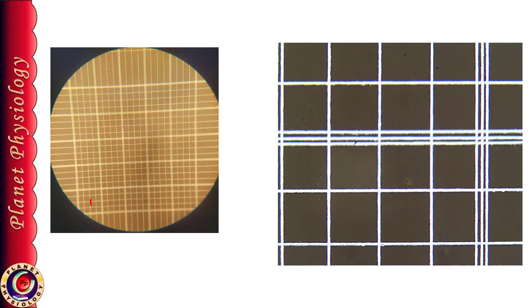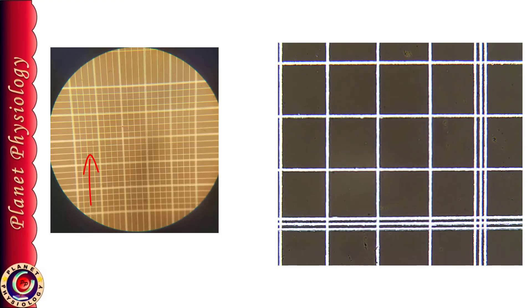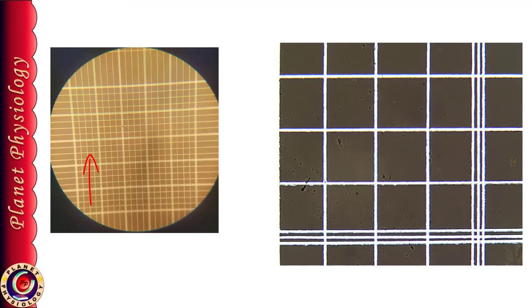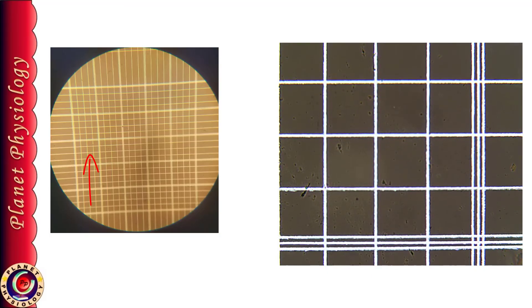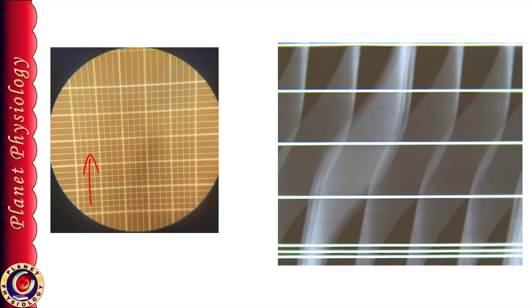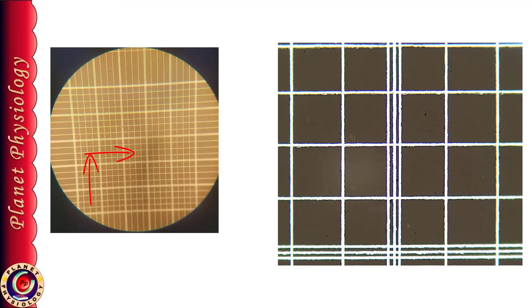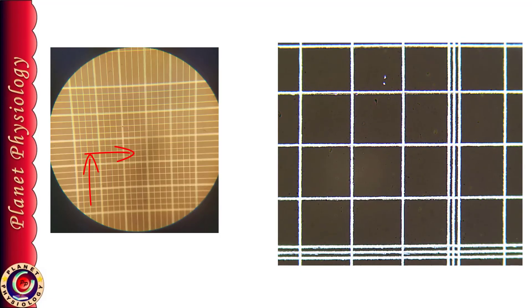To focus central RBC square, start with any one cornered RBC square. Move the stage by 2 medium size triple line bounded squares up. And then 2 similar medium size square towards right. Now you are in central RBC square.